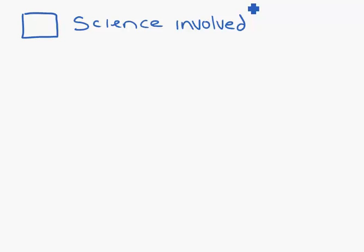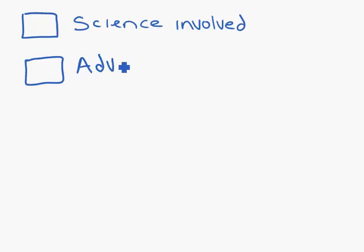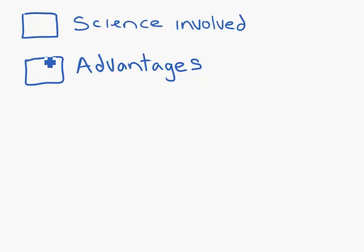The second thing you have to do is talk about the advantages of the science involved — the advantages of what you are talking about. By advantages, the good points: why do we do it? What are the benefits? We do this for these reasons. This is why it's good.